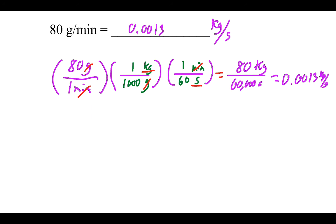That would be the mass flow rate. So you can see how dimensional analysis can work. It really is a matter of setting up a set of parentheses with equalities and making sure you're always canceling properly — knowing what unit goes on top and what goes on the bottom until you've canceled out the units you don't need and you're left with the units you do need. This is a very useful process in not only physics, but in a lot of other sciences. Very important to understand.